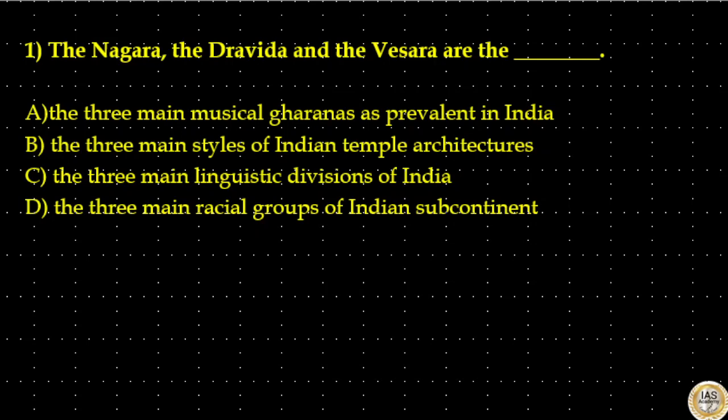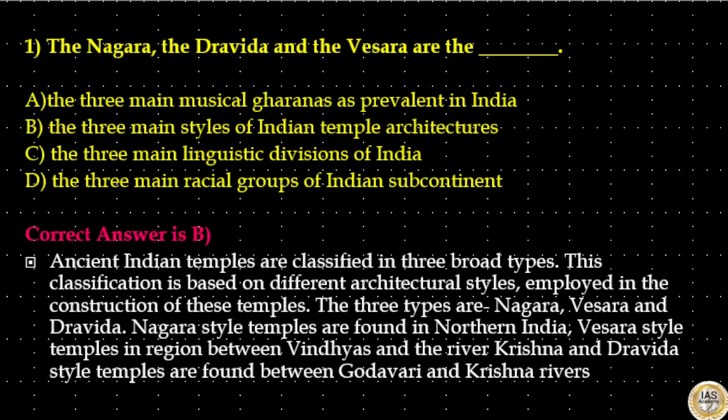Answer to this question is option B: the three main styles of Indian temple architecture. Ancient Indian temples are classified in three broad types based on different architectural styles employed in their construction. The three types are Nagara, Vesera and Dravida. Nagara style temples are found in Northern India; Vesera style temples in the region between the Vindhyas and the river Krishna; and Dravida style temples are found between the Godavari and Krishna rivers.